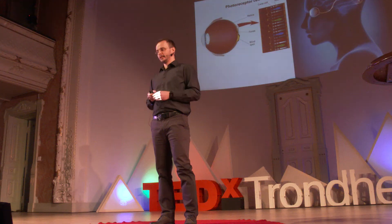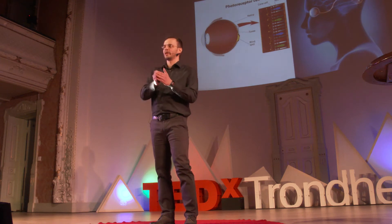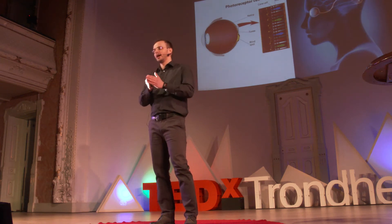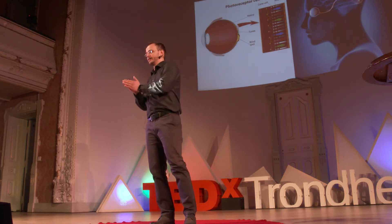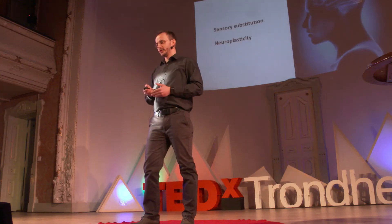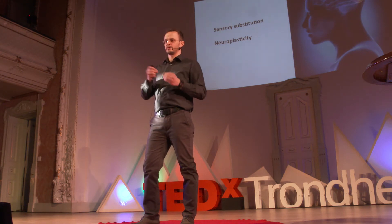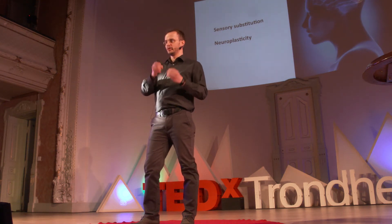When light hits our retina, our photoreceptor cells get activated, and from then on almost everything is electrical. The funny thing is that our brain is so plastic that it doesn't matter which sensory input we use.